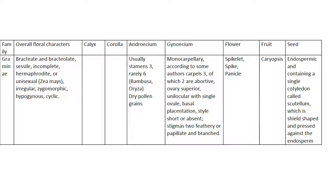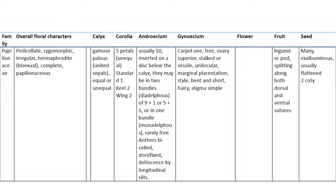Flowers are in spikelets, spike or panicle. Fruit is caryopsis. Seed is endospermic, containing a single cotyledon called scutellum, which is shield-shaped and pressed against the endosperm.